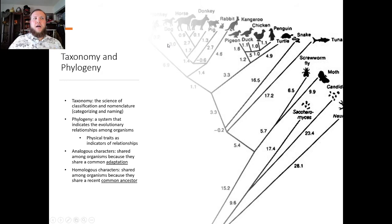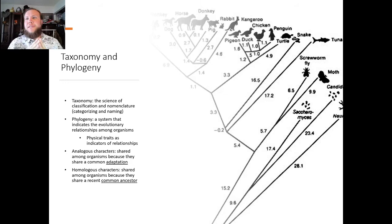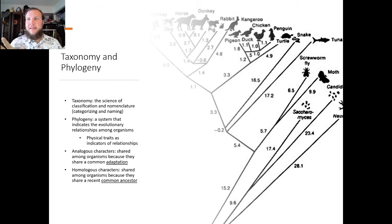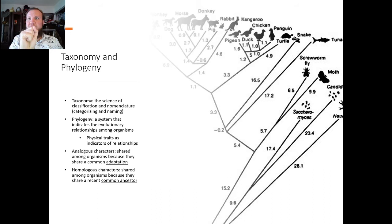This whole classification system is based on taxonomy and phylogeny. Taxonomy is the science of classification and nomenclature — categorizing and naming species. Phylogeny is a system that indicates the evolutionary relationship among organisms. A phylogenetic tree shows how species are related and at what time point they broke off and formed a separate species. What's important are the physical traits. There are two different types: analogous traits, which are shared because of a common adaptation such as swimming or flying, and homologous traits, which are shared because of a common ancestor — which is why we have five digits and grasping fingers similar to a chimpanzee.